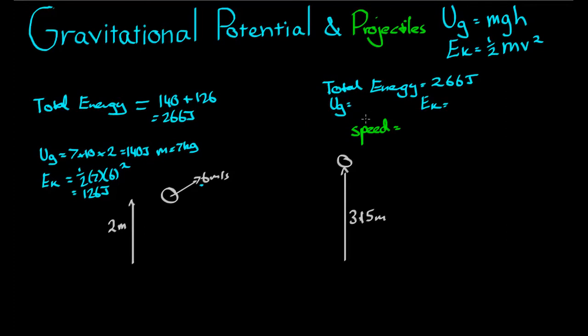We also know, since gravitational potential energy is given by height and weight, what the gravitational potential energy is here, because we have the weight. The weight hasn't changed, m equals 7 kilograms, and we have the height given here. So gravitational potential, mgh, 7 times 10 times 3.15, which equals 220.5 joules. Now remember, the total energy is given by the gravitational potential and the kinetic added together. So if we have 266 equals 220.5 plus kinetic energy, taking 220.5 from both sides gives us a kinetic energy of 45.5 joules.